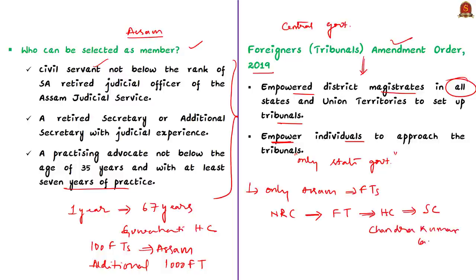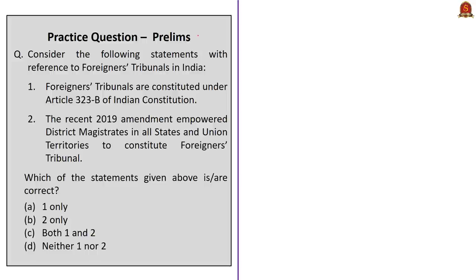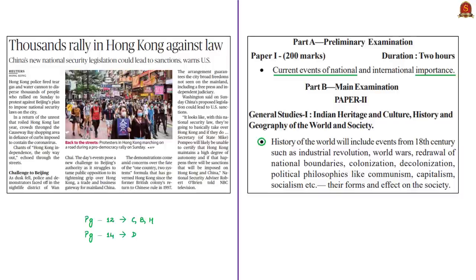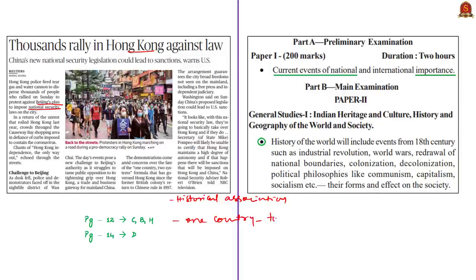This is what you should know about Foreigners Tribunals mainly for the prelims examination. Let us proceed to the next news article. This article is with reference to protests in Hong Kong, happening in response to plans of the Chinese government to curtail the freedom of the people of Hong Kong through a new security law. In this context, we'll see the historical association of Hong Kong with mainland China, the principle of one country two systems, and recent developments in China-Hong Kong relations.